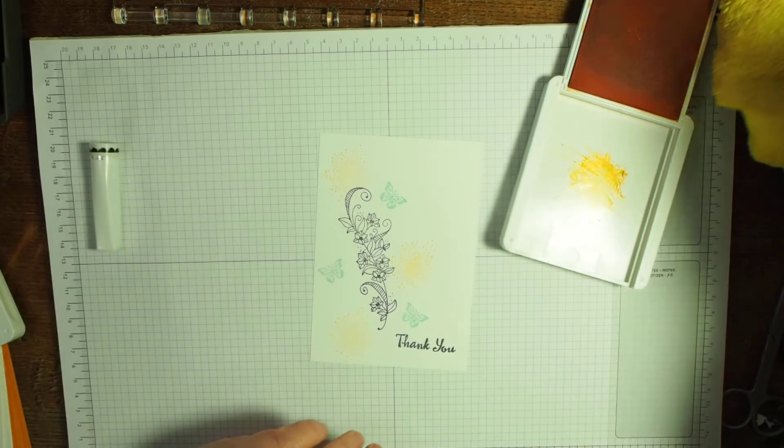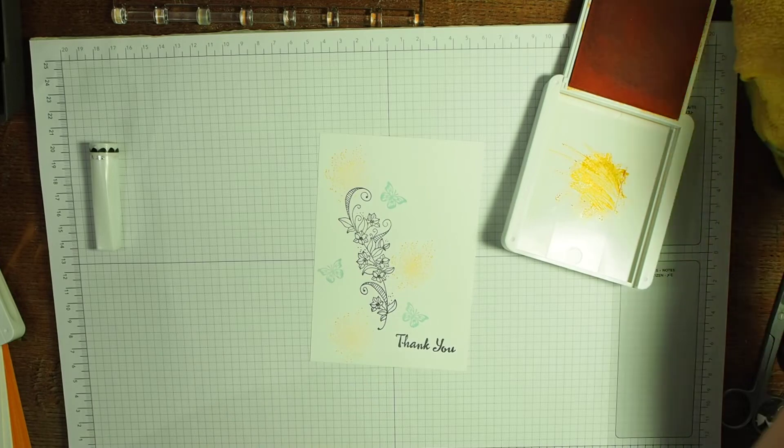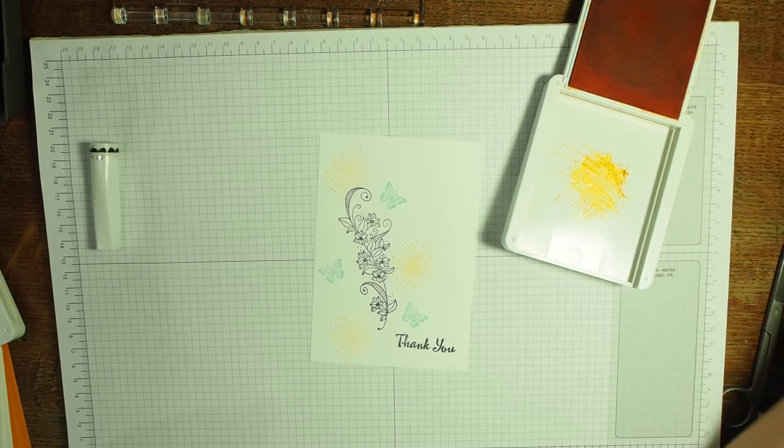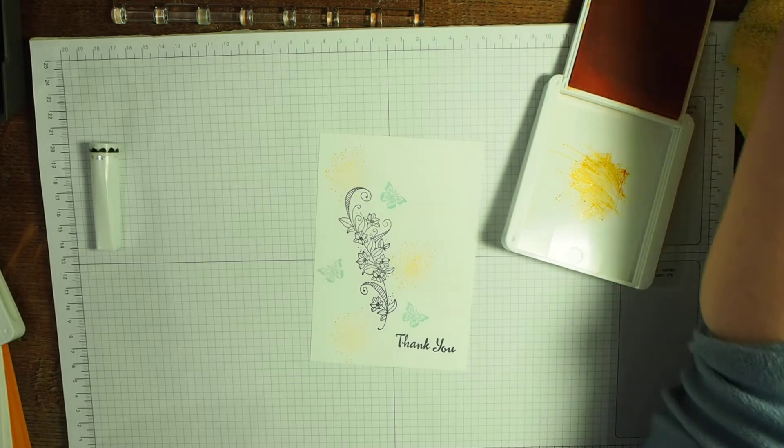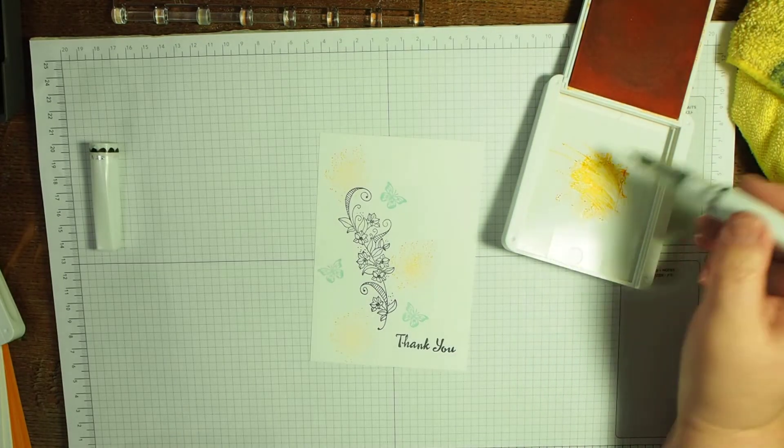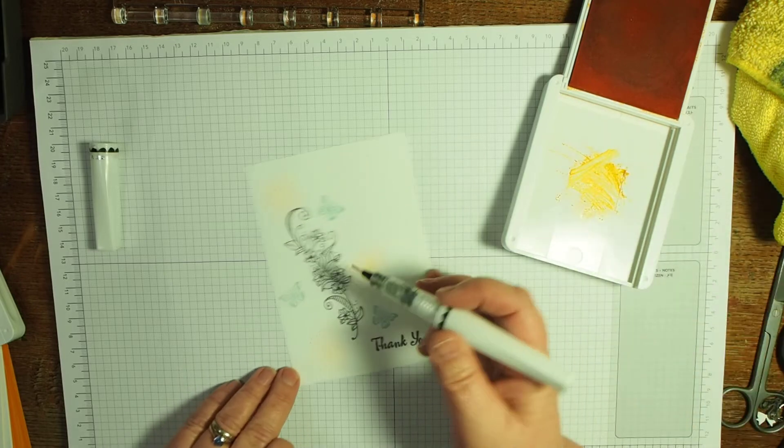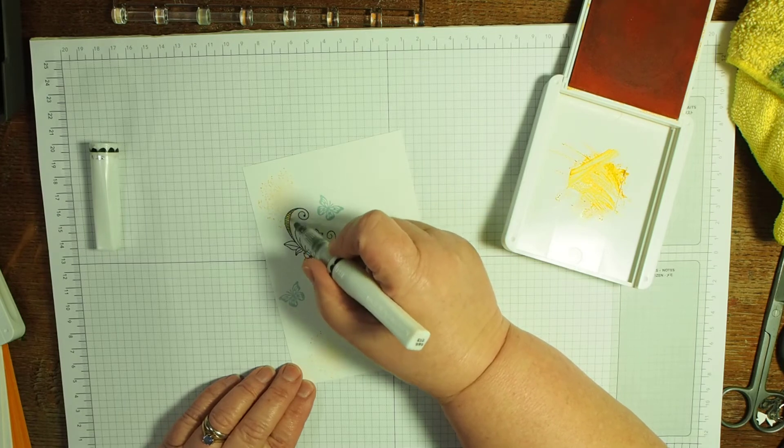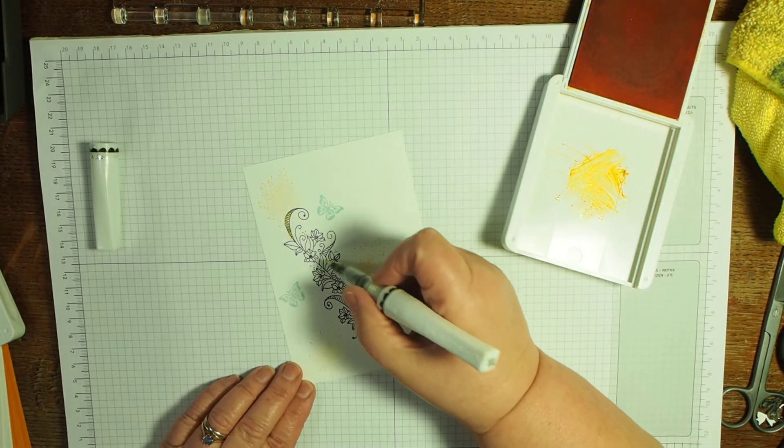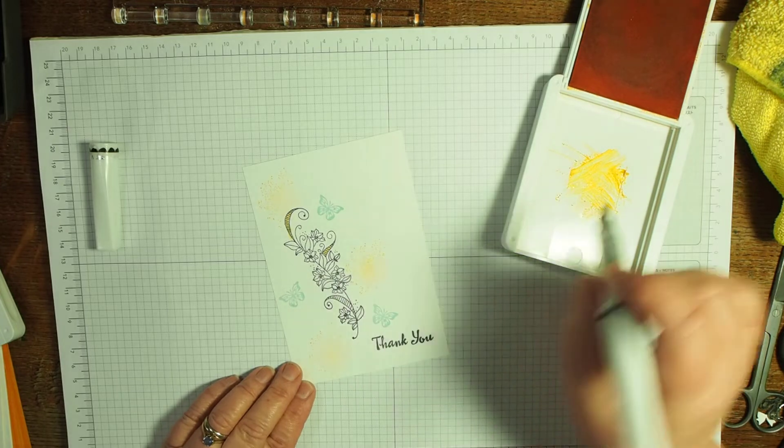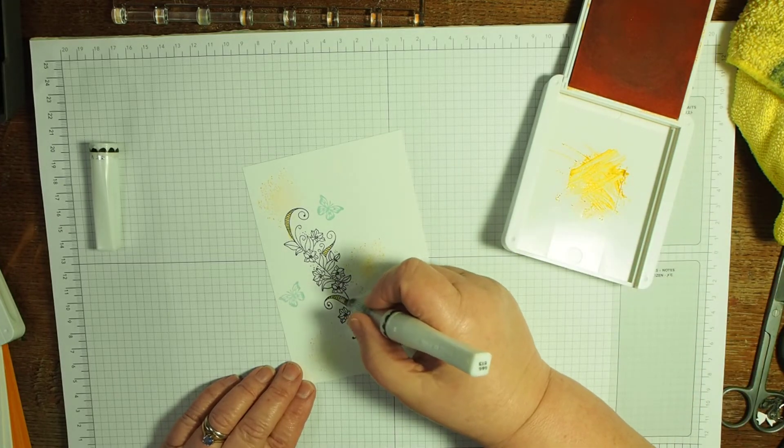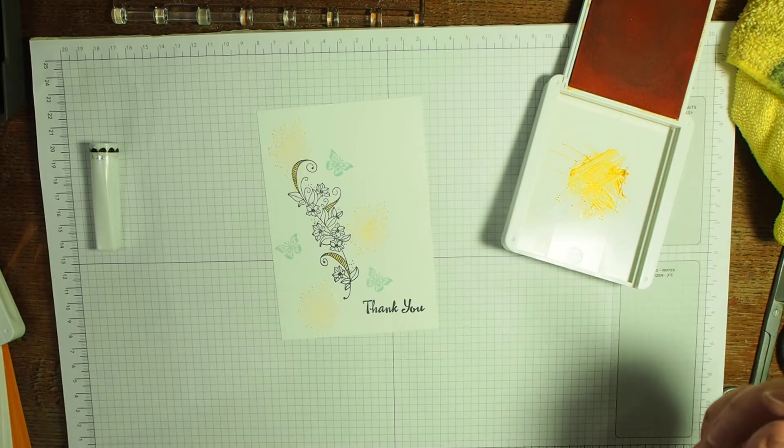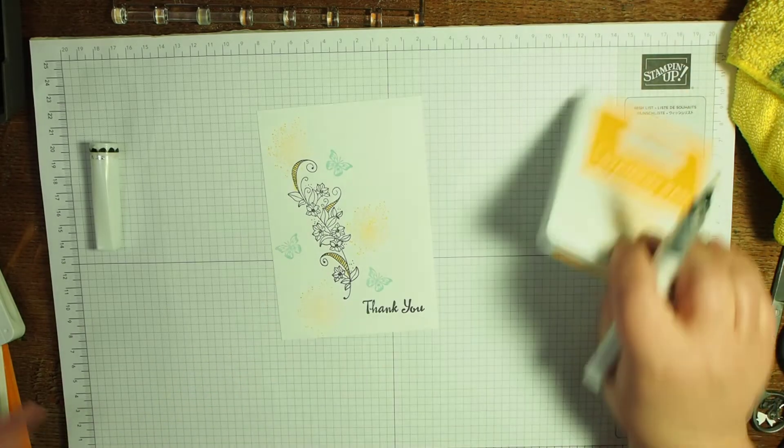I think I might have just put it to get cleaned, so anyway. Using a bit of Mango Melody, I'm just doing these ribbony bits here in Mango Melody. You don't have to be too accurate—just to give it a watercolor look. But by using the Wink of Stella, you're giving the watercolor look with a bit of sparkle. What's not to like?